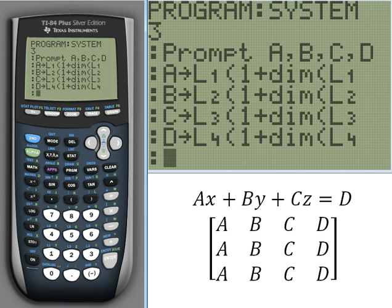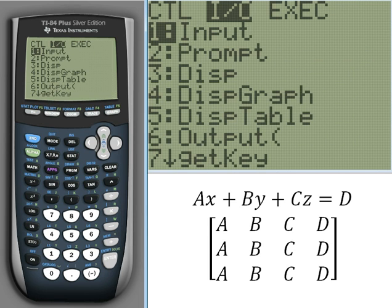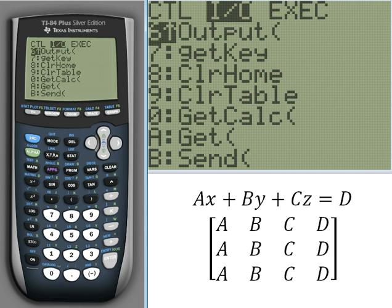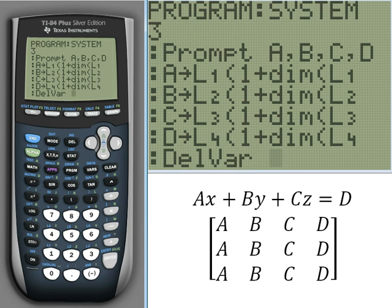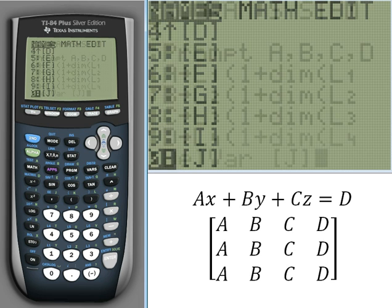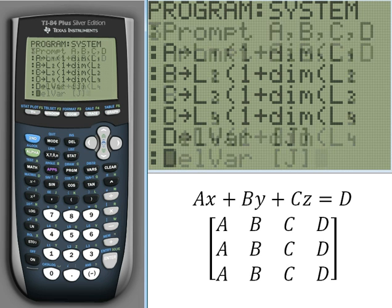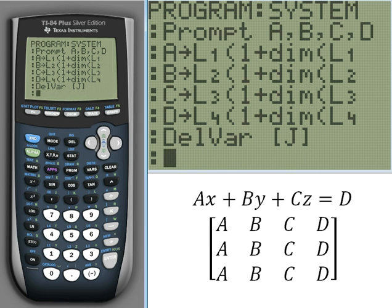Now the next thing we want to do is we want to take the data stored in these lists and put it into a matrix. So then we can reduce row echelon form that matrix and get our answer. To start, we're going to use matrix J, just because you're least likely to have data stored in that. So we're going to go ahead and delete variable J. Delete variable J, and matrix J is matrix J.